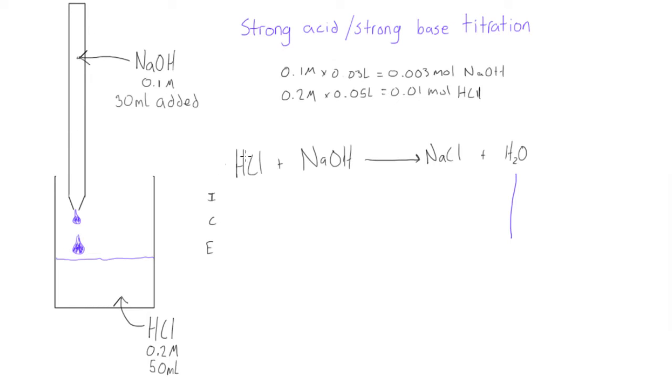And we're going to have 0.003 moles NaOH. 0.003. 0.01 for HCl. 0.01. And this was 0. Okay.